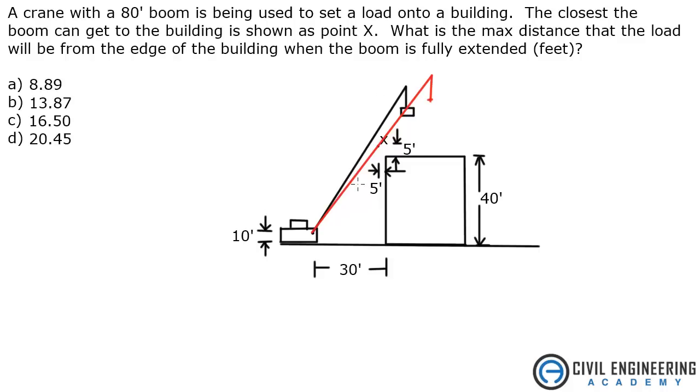This is basically trig. So I'm going to take this red line and move it over here. Here's our boom. Okay, somewhere in here is point X. We know when that's fully extended it's 80 feet. I'm just going to start drawing some triangles in here and use some of the dimensions that we've been given.